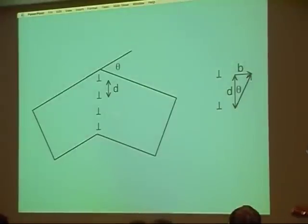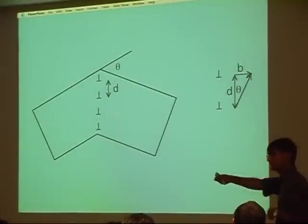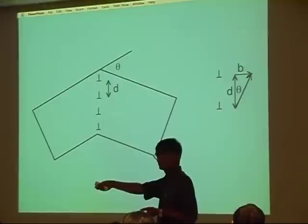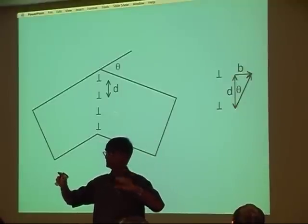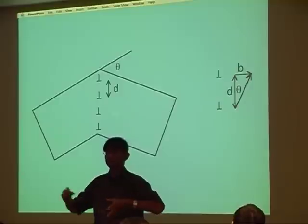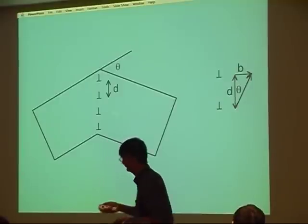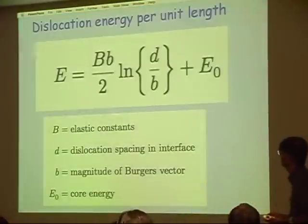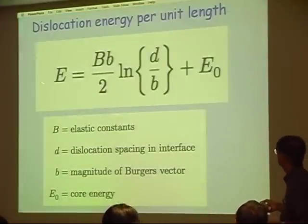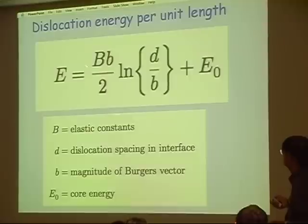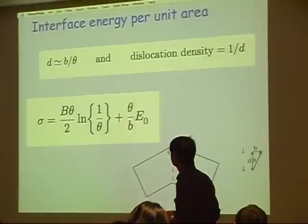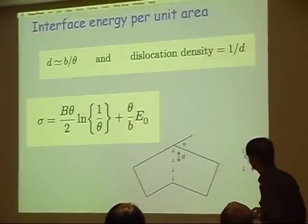In this array of dislocations, each dislocation has an energy per unit length, and I know the spacing between dislocations. So if I work out the total amount of dislocation line energy in a unit area, then I have the grain boundary energy per unit area. This was done a long time ago by Read. The energy per unit area is related to the spacing between the dislocations, the Burgers vector of the dislocations, the elastic constants, and the core energy of the dislocation. Now, D effectively represents the distance to which the strain field of a dislocation extends.